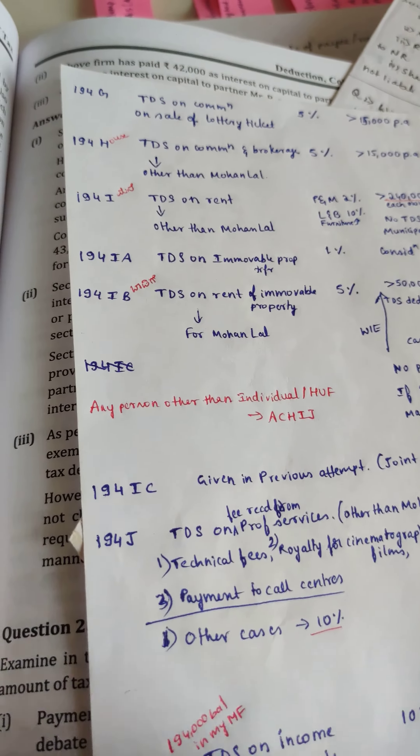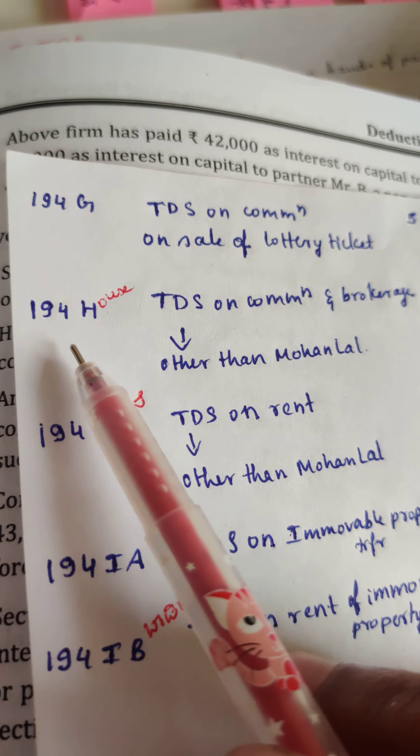194DA — DA stands for after death. After death, the policy will mature. So 194DA covers TDS on maturity proceeds of a life insurance policy. On those maturity proceeds, 5% TDS will be deducted, but only if the amount received is more than 1 lakh rupees. The 5% is deducted on maturity proceeds minus premium paid — that is, the difference between what you received and what you paid. So to recap: 194D is tax on insurance commission at 5%, applicable when greater than 15,000.